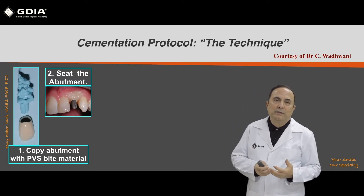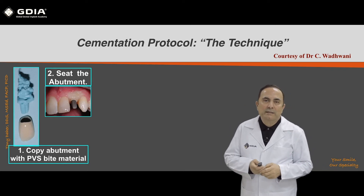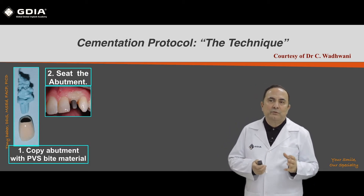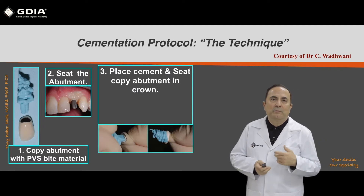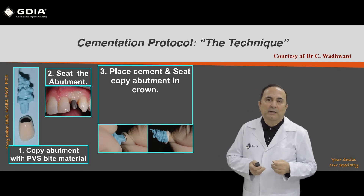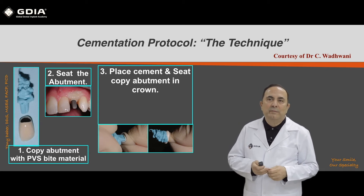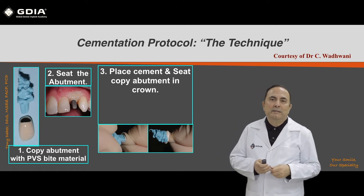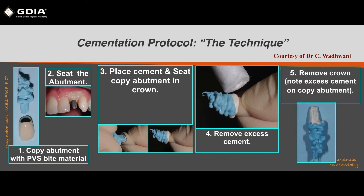When you receive your cement retained restoration with a custom abutment, you take the crown and place some PVS — polyvinyl siloxane — inside it. The purpose is to duplicate the abutment shape. You then place the abutment, torque it to the manufacturer's recommendations, load the crown with a temporary cement, place the duplicate abutment inside the crown, and most of the cement will stay on your abutment copy.